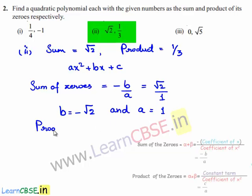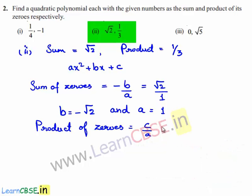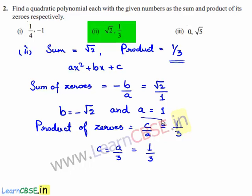Also, we know that the product of zeros is equal to c/a, and the given product is 1/3. So we can say that c is equal to a/3. But we found the value of a to be 1, so finally we have a = 1, b = -√2, and c = 1/3.